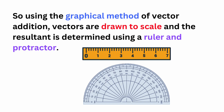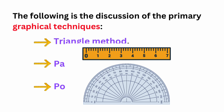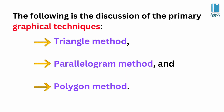You should be able to use the vector as a result in a vector. The problem is that the protractor is used. The magnitude is considered. The following is the discussion of the primary graphical techniques. So after that, the words are the same.